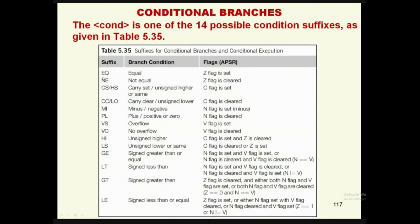The 14 available branch conditions include: Branch if Equal, Branch if Not Equal, Branch Carry Set, Branch Higher or Same, Branch Carry Clear, Branch if Unsigned Lower, Branch if Minus, Branch if Plus, Branch if Overflow, Branch if Overflow Clears, Branch if Unsigned Higher, Branch if Unsigned Lower, Branch if Greater Than or Equal, Branch if Less Than, Branch if Greater Than (signed), and Branch if Less Than or Equal. These 14 conditions give the programmer much more customizable branch control.